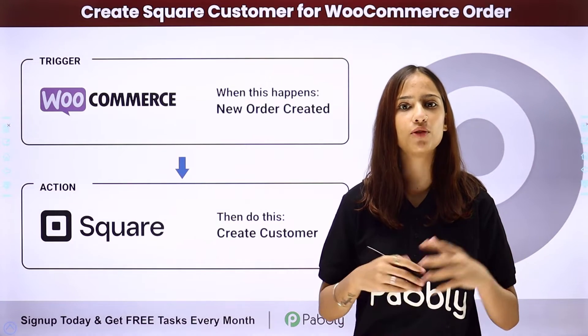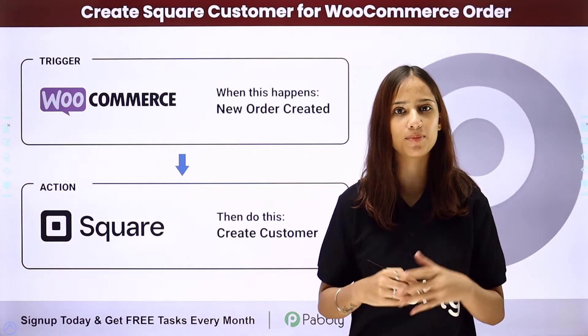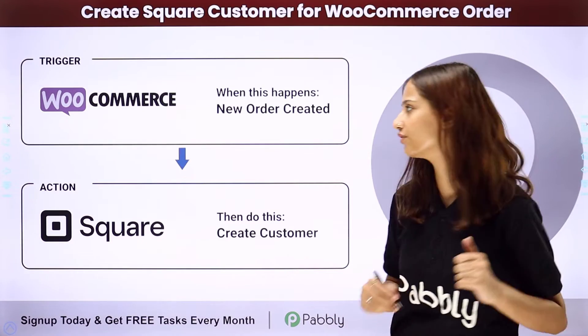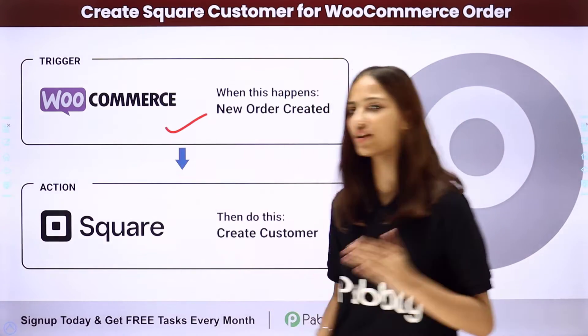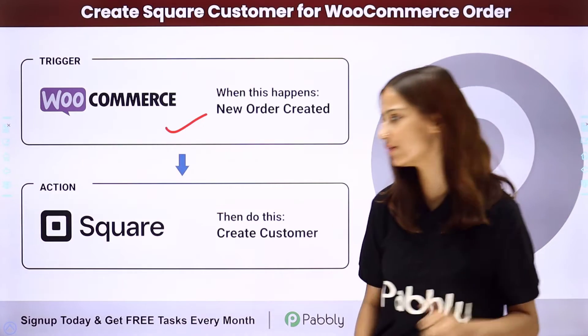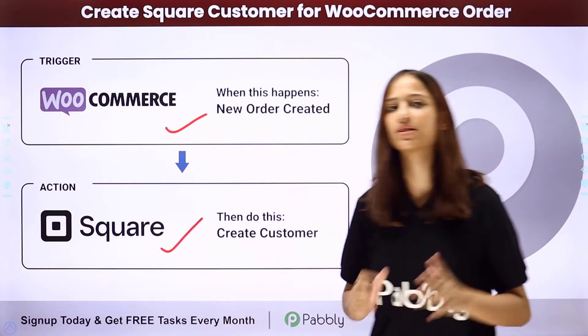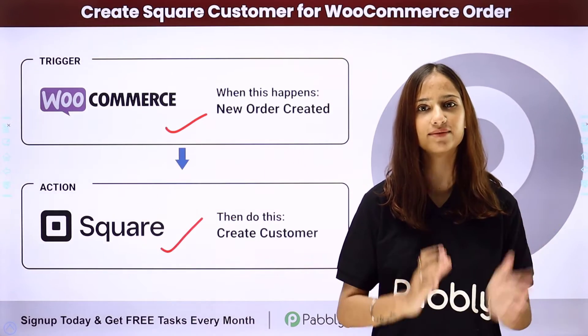So how will we be performing this integration? We will be using Pabbly Connect, where our trigger application will be WooCommerce and our action application will be Square. So to set up this integration, follow me through the screen.